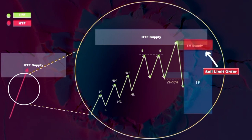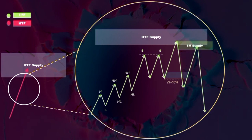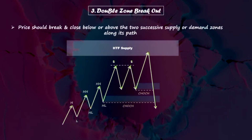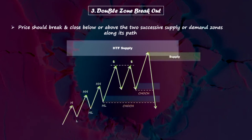Now let's proceed to the next criteria: the double zone breakout. For a change of character pattern to be more effective with a higher chance of success, the price should break and close below or above two successive supply or demand zones along its path. For example, if price breaks through a second demand zone, we have a double zone breakout — the price breaks out of two successive demand zones with a bearish single-leg movement. This is a strong confluence and confirmation for entering short or long positions. If the price broke through and closed below two demand zones, leaving a significant inefficiency behind, this provides a strong confirmation. A newly generated strong supply zone forms at the extreme.